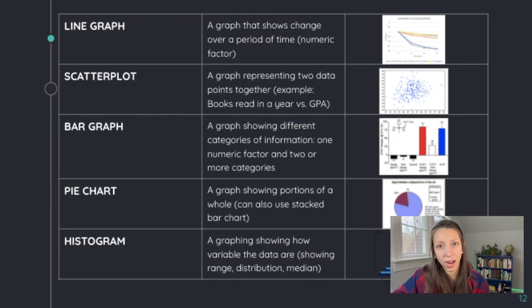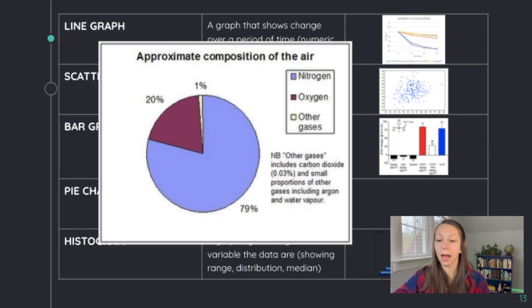A pie chart is also a graph that a lot of students are familiar with, but it's usually not one of the graphs that's going to be the most helpful for biologists. A pie chart is used when showing portions of a whole, usually adding up to 100%. So for example, showing the different components of your blood. In this case, this pie chart is showing the approximate composition of the air by different gases.